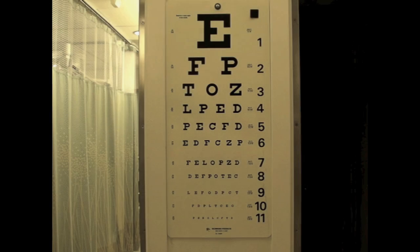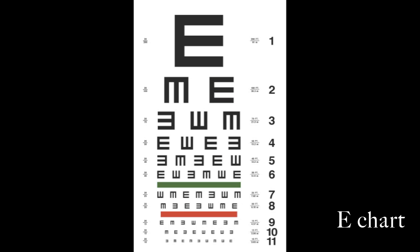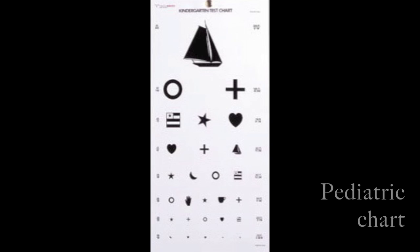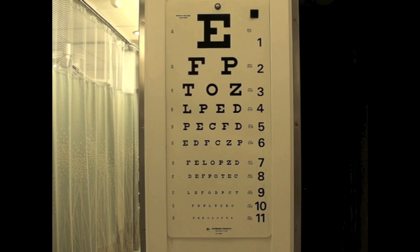In an ambulatory and cooperative patient, the Snellen chart is commonly used to measure visual acuity. The pocket-sized Rosenbaum chart is used for non-ambulatory but cooperative patients, while the E-chart may be used for patients that do not know the alphabet or are non-verbal. For pediatric patients and patients that cannot read, the picture eye chart may be used. Use an interpreter when possible for non-English speaking patients. We will only cover the use of the Snellen chart in this module.